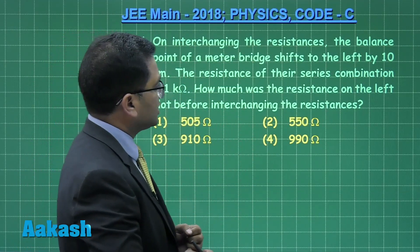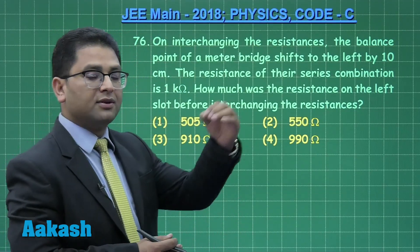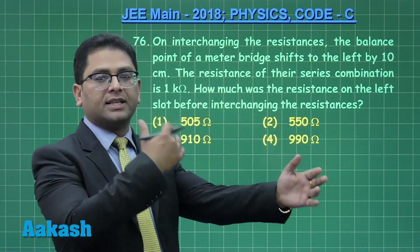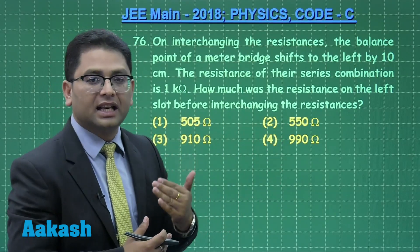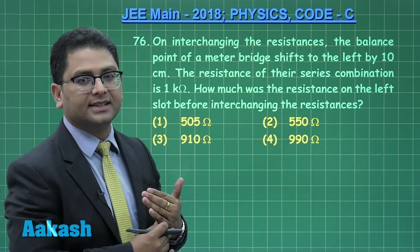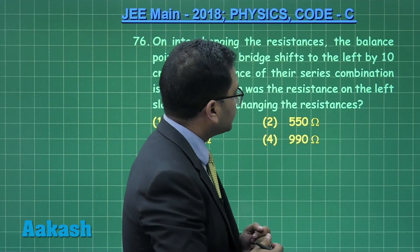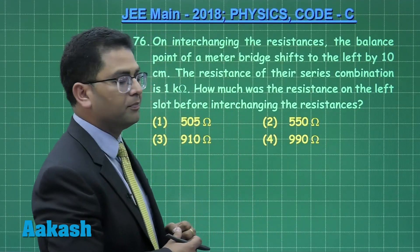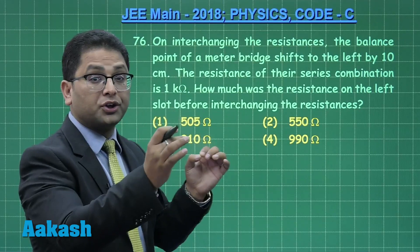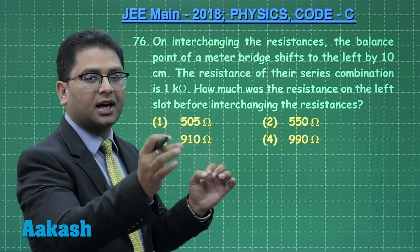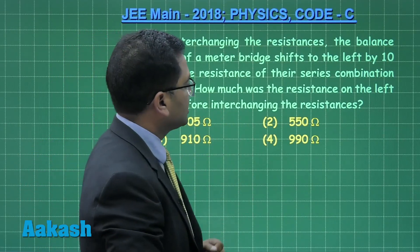This question is about the meter bridge. On interchanging the resistances, the balance point shifts to the left by 10 centimeters. The resistance of the series combination of R1 and R2 is 1 kilo ohm.